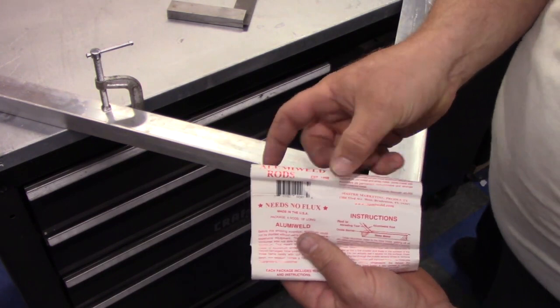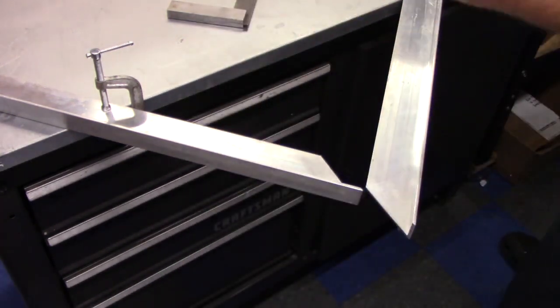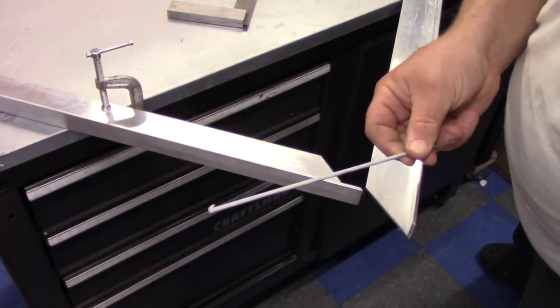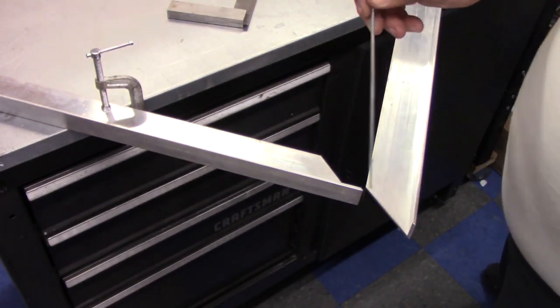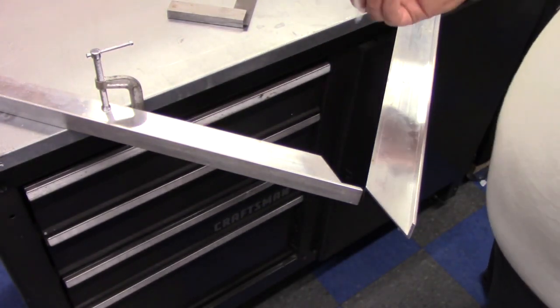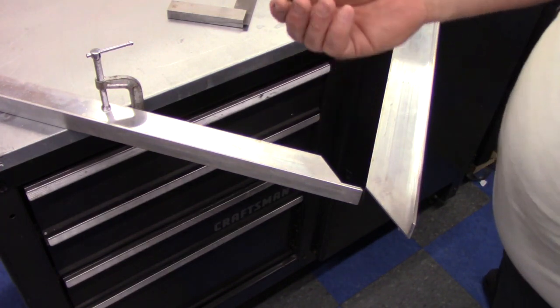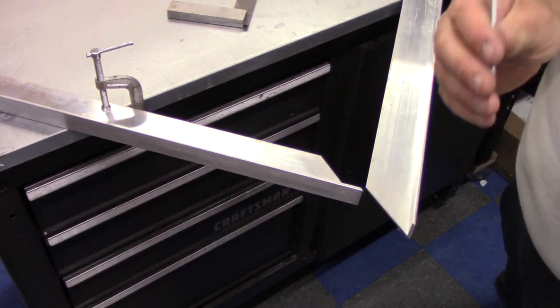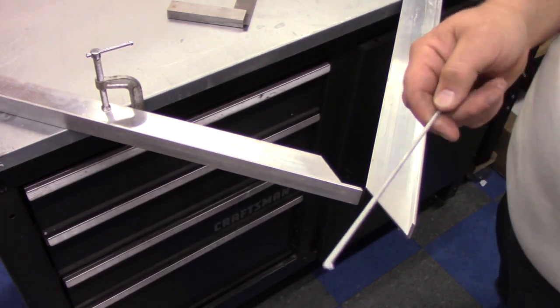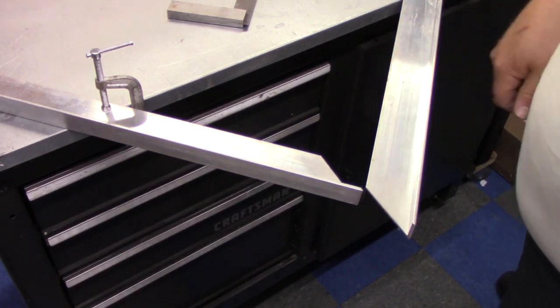I also tried this stuff, this aluminum weld stuff you can get this at Harbor Freight. It basically looks like a little aluminum rod and you're supposed to be able to heat up, melt this in there and it should work. I could never get these to work. I tried multiple times, multiple different alloys. I can't get these to work for me. Garbage.